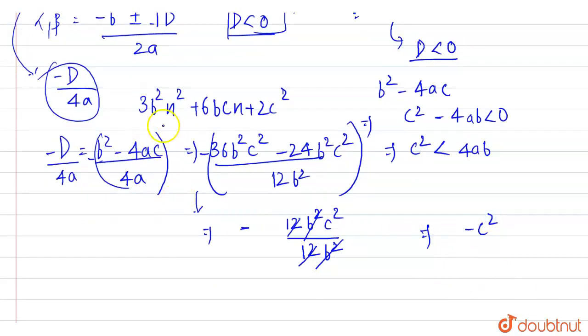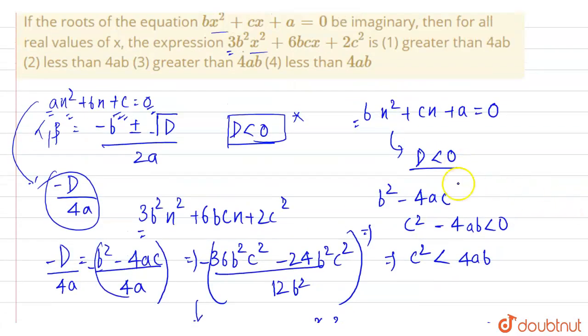Minus c square. So this expression's minimum value is this. Let me write: 3b square x square plus 6bcx plus 2c square is always greater than minus c square since it is a minimum value.